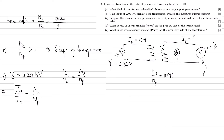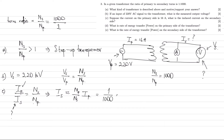We have the current on the primary side and we need the current on the secondary side, given the turns ratio of 1000. The current on the secondary side is going to be (N sub P / N sub S) times I sub P — that's the reciprocal of the voltage relationship. So it's going to be 1 over 1000 times 16 amperes on the primary side, giving us 1.6 times 10 to the minus 2 amperes.